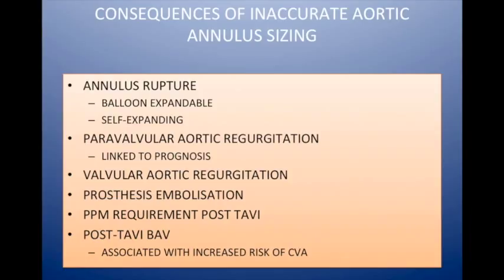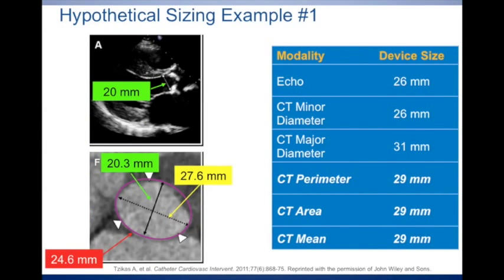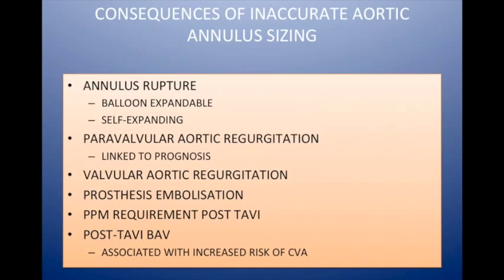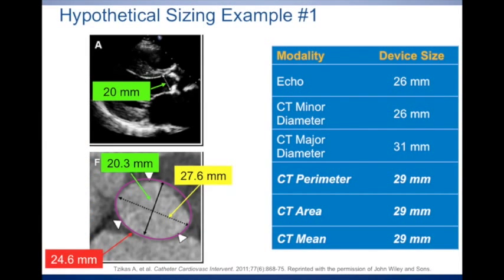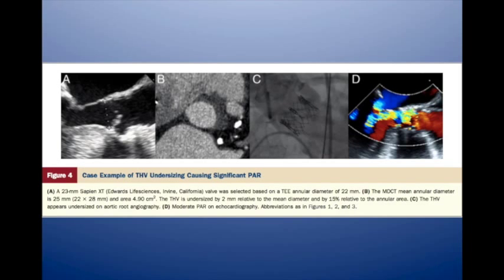This can happen — your valve might end up in the ascending aorta, and you might get paravalvular regurgitation. Does that matter? Yes. If it's moderate or severe, outcomes are significantly worse than with trivial, none, or mild paravalvular regurgitation. It's really important to reduce paravalvular regurgitation, which is much more common with TAVI than valvular regurgitation.